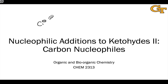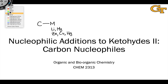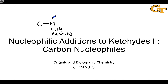Often we don't deal directly with carbanions because carbanions are extremely reactive electron donors. Instead we deal with what are called organometallic reagents, which contain a carbon-metal bond. The metal might be something like lithium, magnesium, or a transition metal like zinc, copper, or mercury. In all of these reagents the metal is less electronegative than carbon, so the metal has partial positive charge and the carbon has partial negative charge. These are called organometallic reagents.